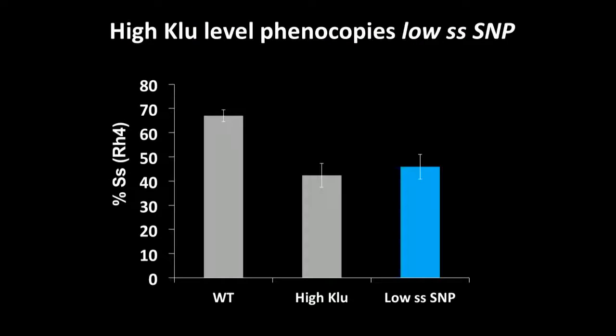I just want to draw your attention to this one observation we made, that is when we overexpressed clue, these lines seem to phenocopy lines with the low spineless SNP. That suggests to us that maybe there's some relationship between clue levels and binding affinity and the spineless ratio.